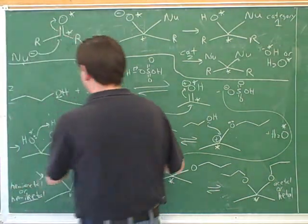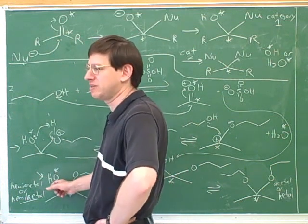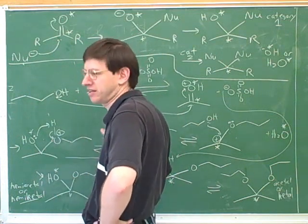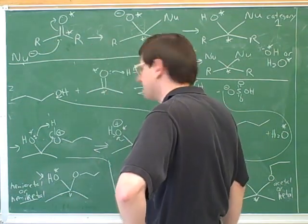If we had split this proton transfer into two separate steps, we would have a hemiacetal or a hemiketal intermediate. Now, since we're actually going to do that as a single proton transfer, you're actually usually not really ever going to draw the hemiacetal or the hemiketal. You should know in your mind that you're passing through that as a kind of intermediate because that's the kind of thing that you could be tested on.